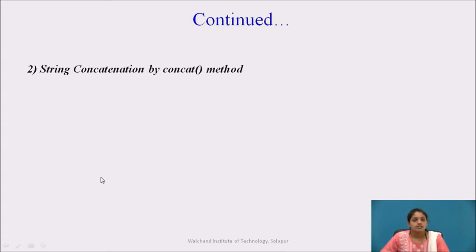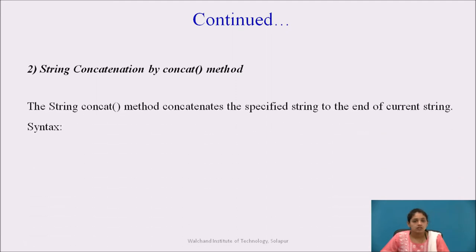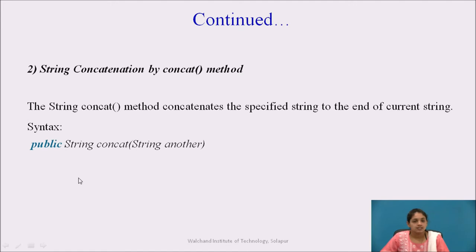The second method is string concatenation using the concat method. The concat method concatenates the specified string to the end of the first string. The syntax is: s1.concat(s2), where s2 is the second string placed in brackets.